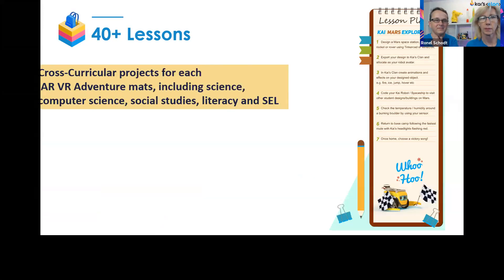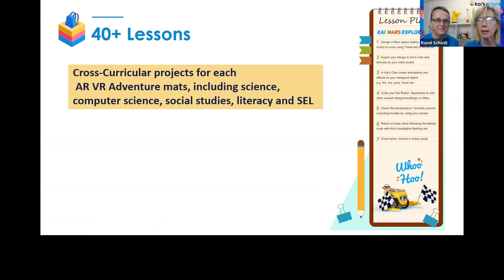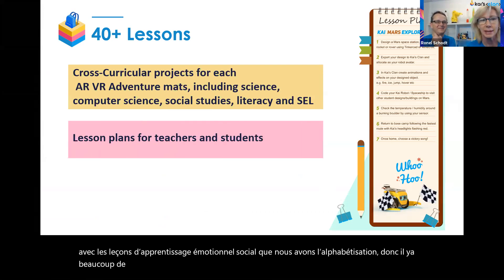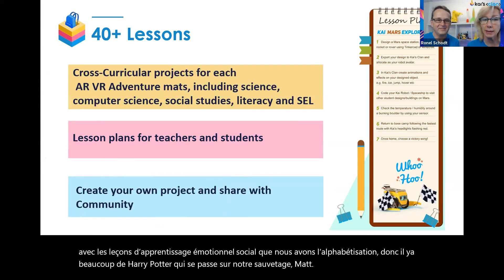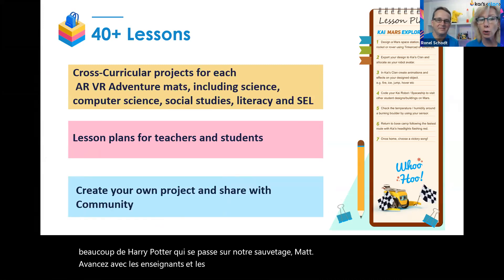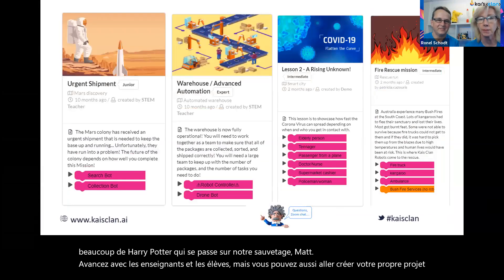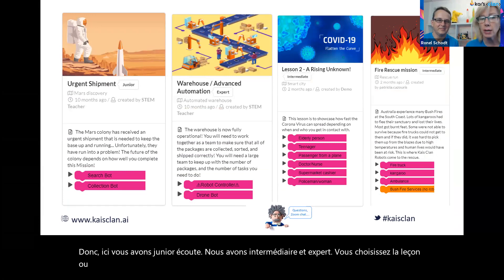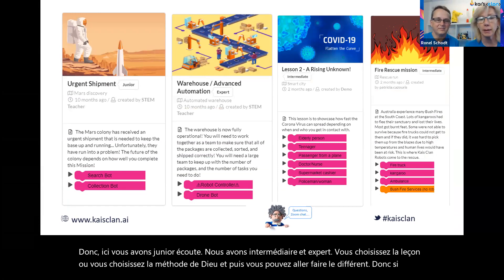When we look at the lesson plans, we've got about 42 or 43 — three tiers: junior, intermediate, and expert. They're cross-curricular: some science, some computer science, social emotional learning lessons, literacy. There's a lot of Harry Potter happening on our mats. There are lesson plans for both teachers and students, and you can also create your own project and share it in the community. Choose the lesson or the mat you have, and go from there.